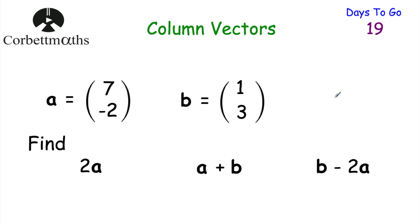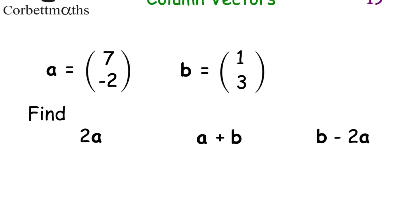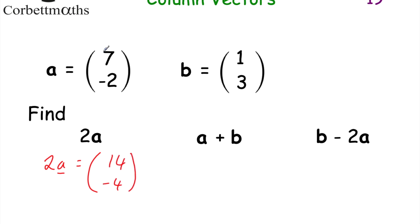Now let's look at column vectors in a bit more detail. Sometimes we may be given column vectors such as a and b and asked to work out things such as 2a, or a plus b, or b minus 2a. Here we've got vector a equals (7, -2) and we're asked to find 2a. 2a would be equal to 14, negative 4 — because 2 times 7 is 14 and 2 times negative 2 is negative 4.